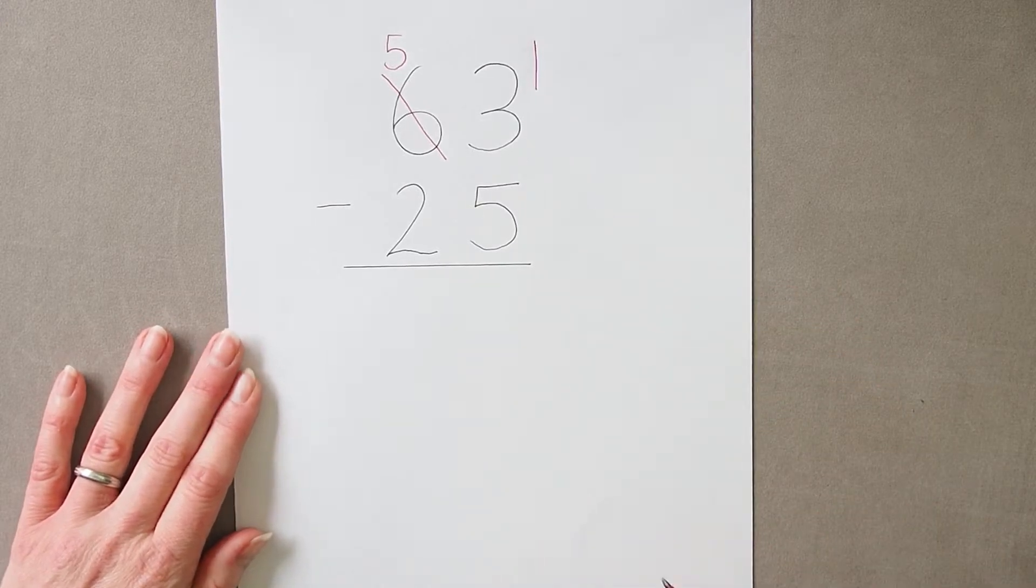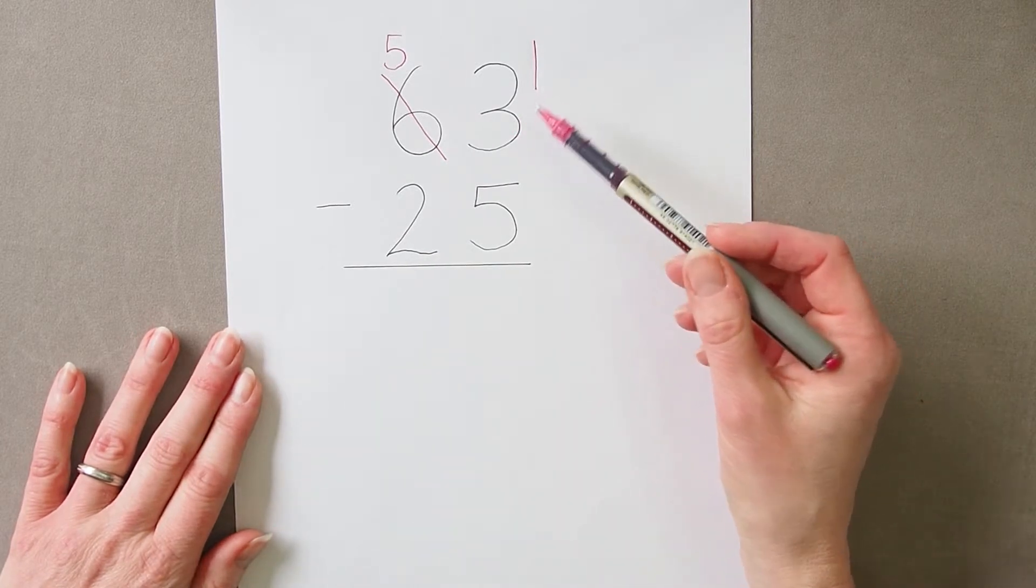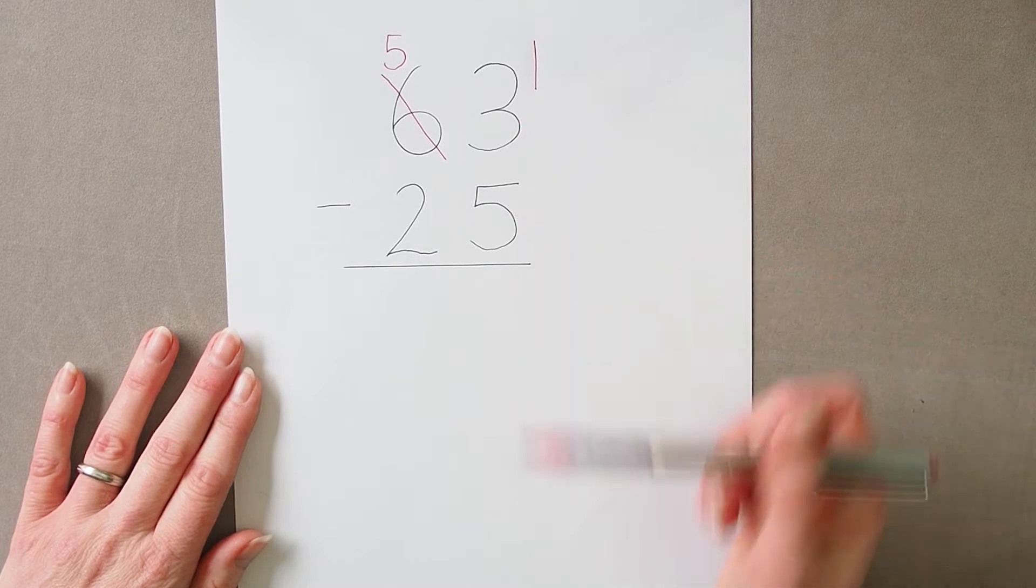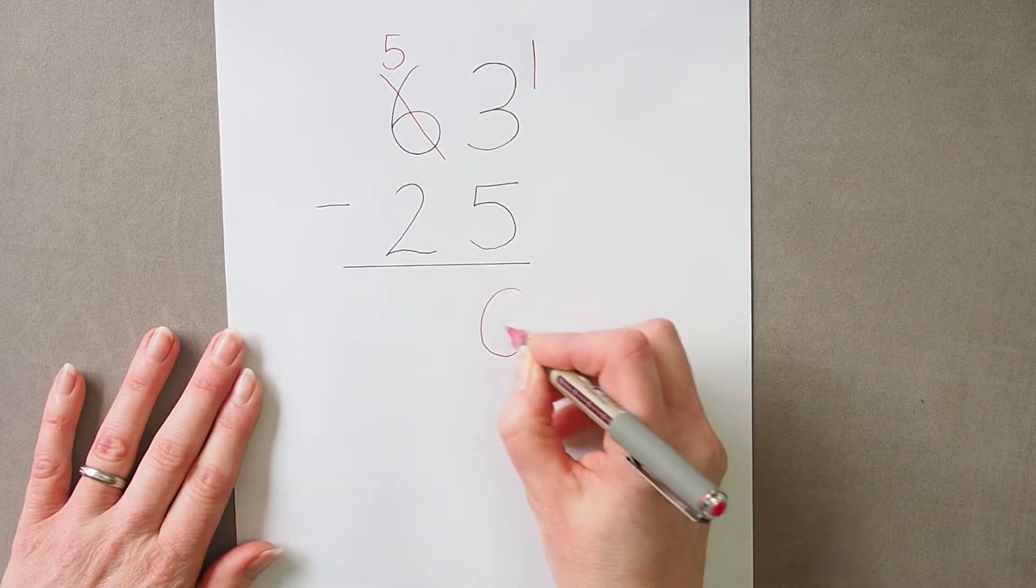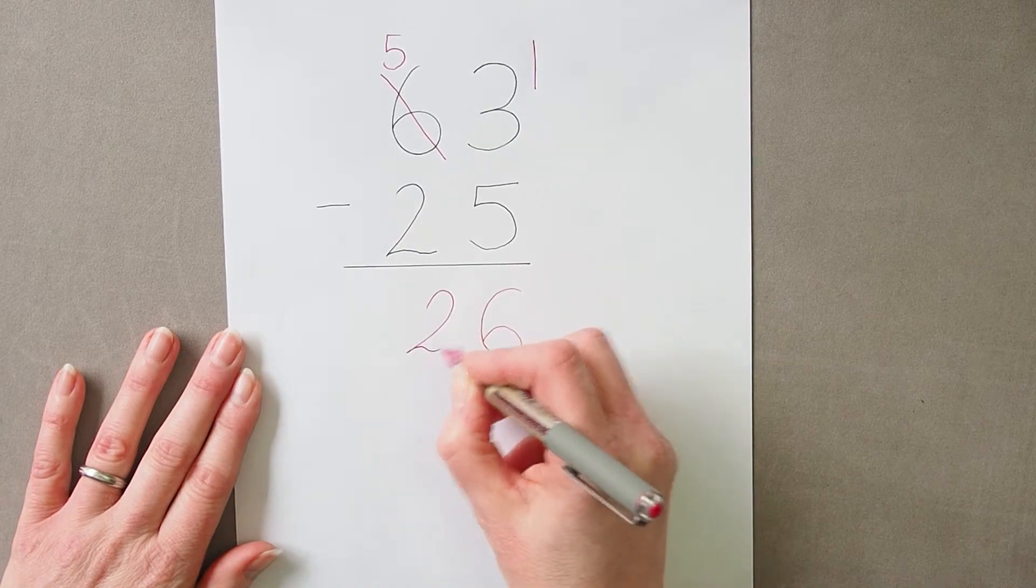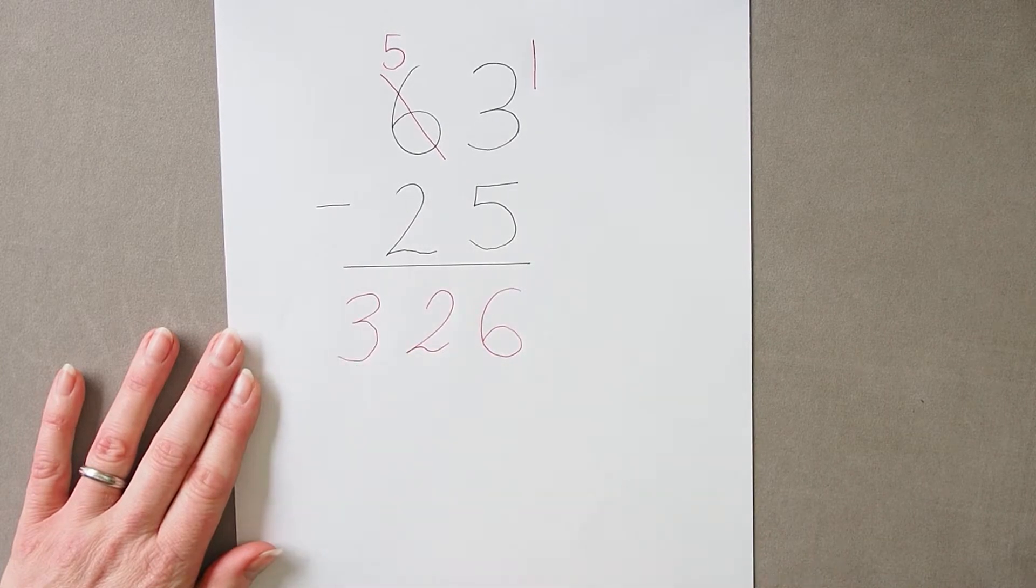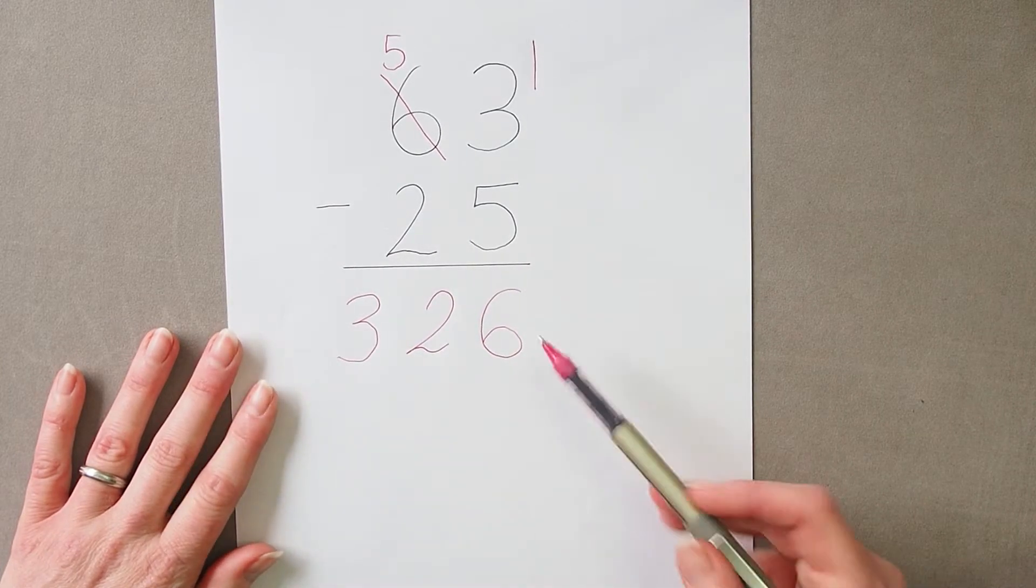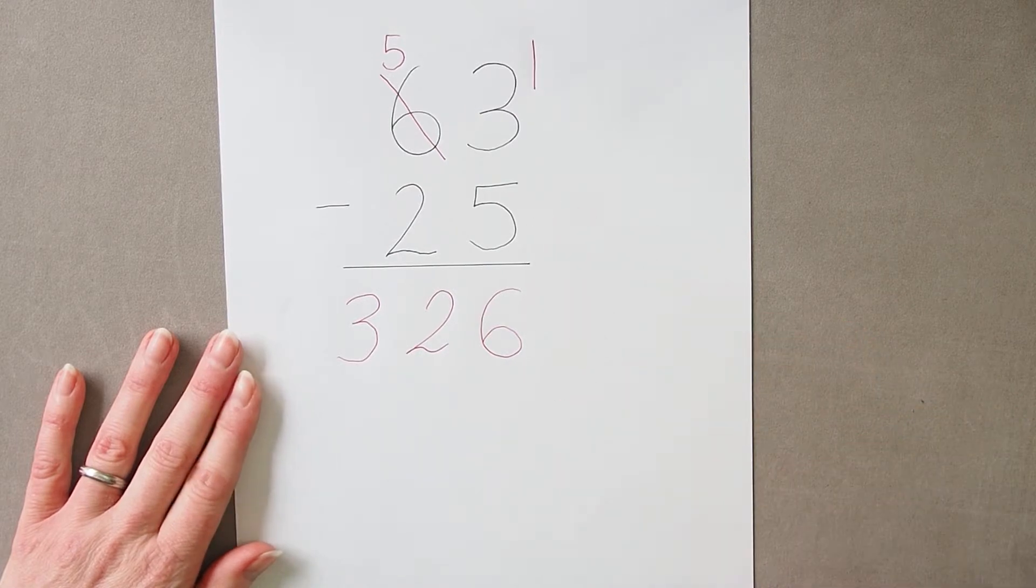The second thing that can happen is that pupils can actually read that now as 31 and say 31 take away 5 equals 26, and write 26 in the answer line and then go on to complete the calculation. Obviously if they look at the size of the answer they should be able to see that this can't be right.